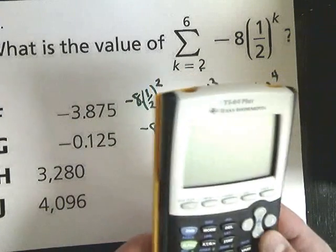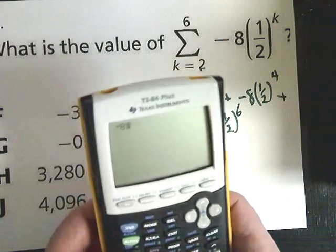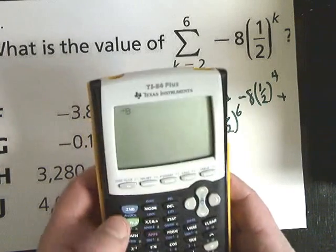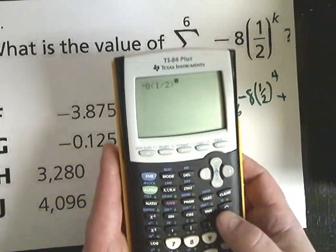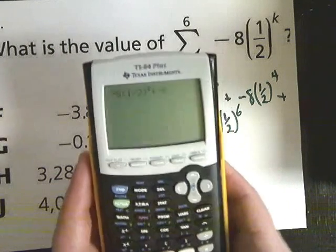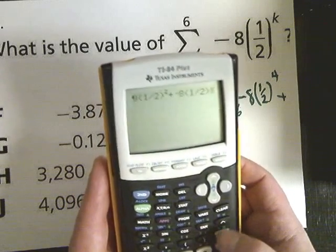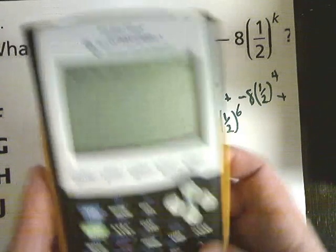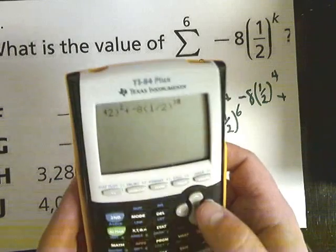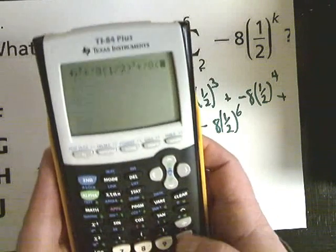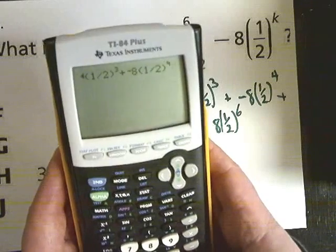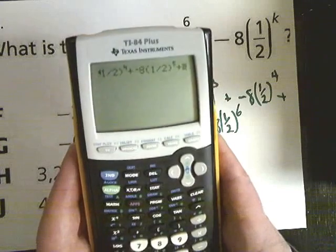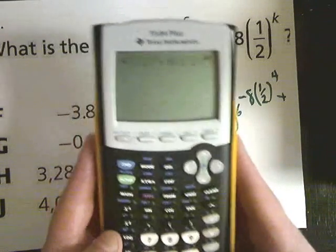And all you have to do is, I mean if you want to write them all down that's fine, you can just go in and do negative 8, 1/2 raised to the second power, plus negative 8, 1/2 raised to the third power. And by the way, if you don't want to do it this way and you just like to write out the terms for each one of them, that's completely fine. Plus negative 8 times 1/2 raised to the fourth power, plus negative 8 times 1/2 raised to the fifth power, plus negative 8 times 1/2 raised to the sixth power.